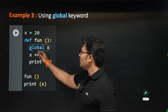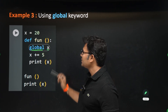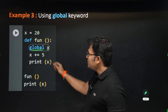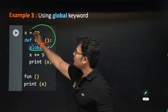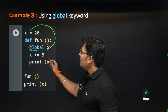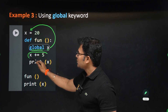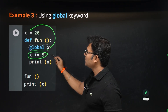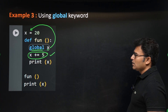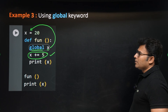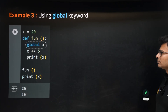If you add the global keyword to x inside the function, it means you are referring to the global variable. Then if you try to modify it, that is allowed. Without making it global, you cannot modify it.